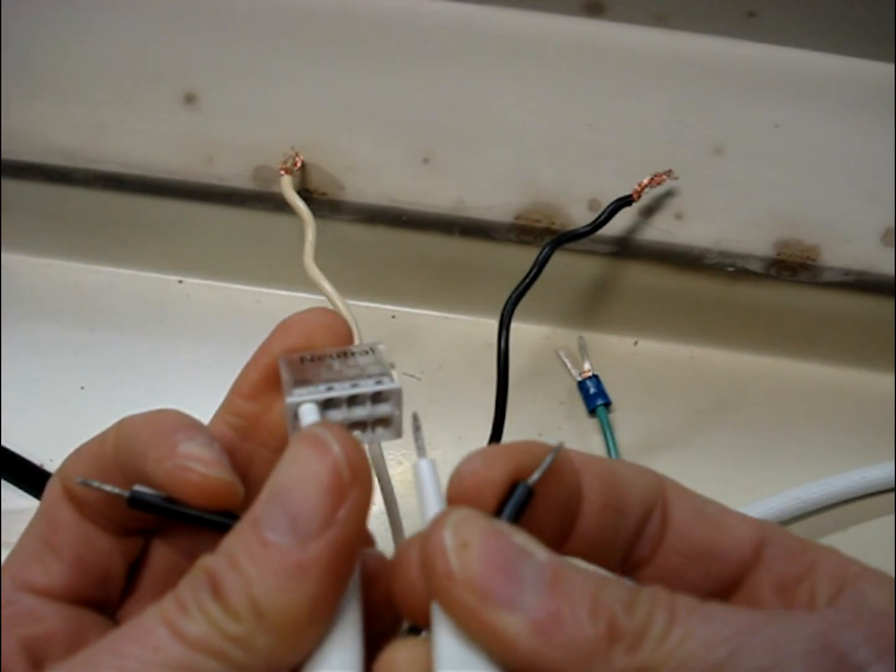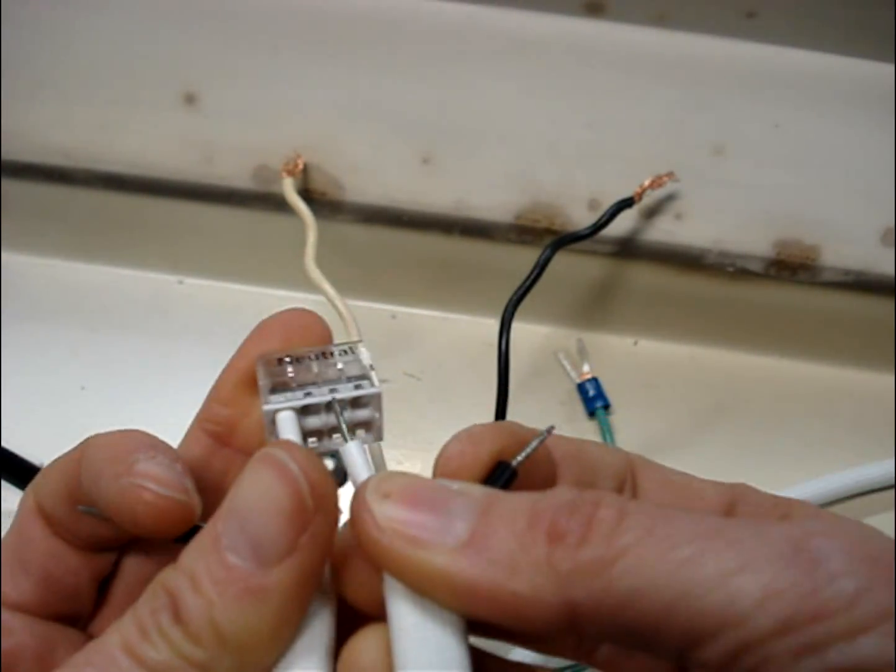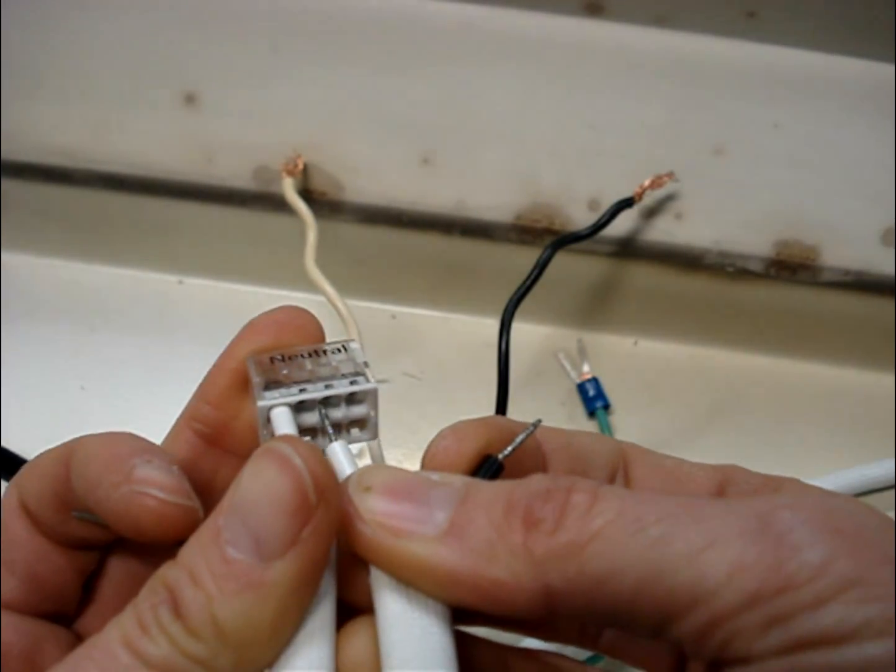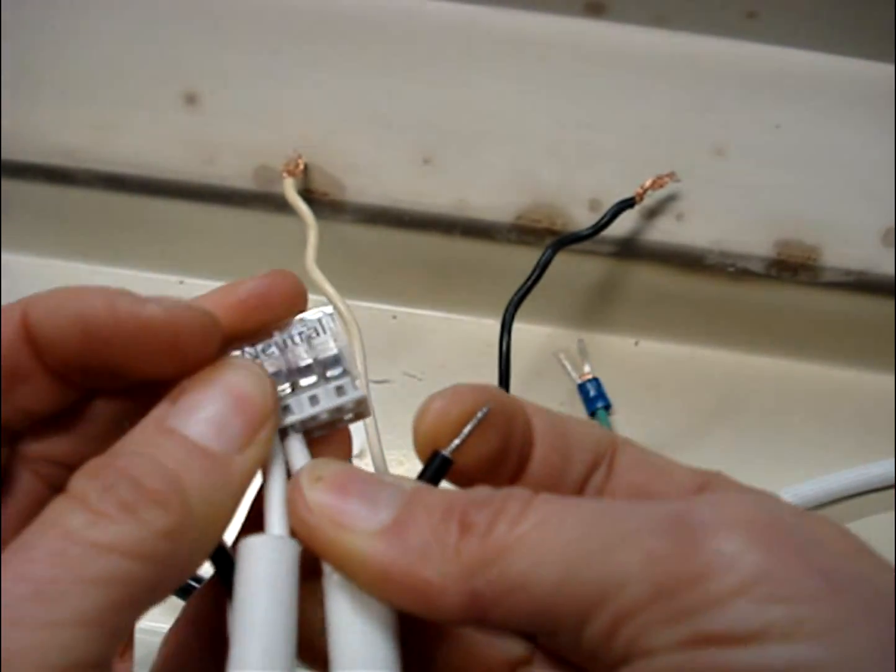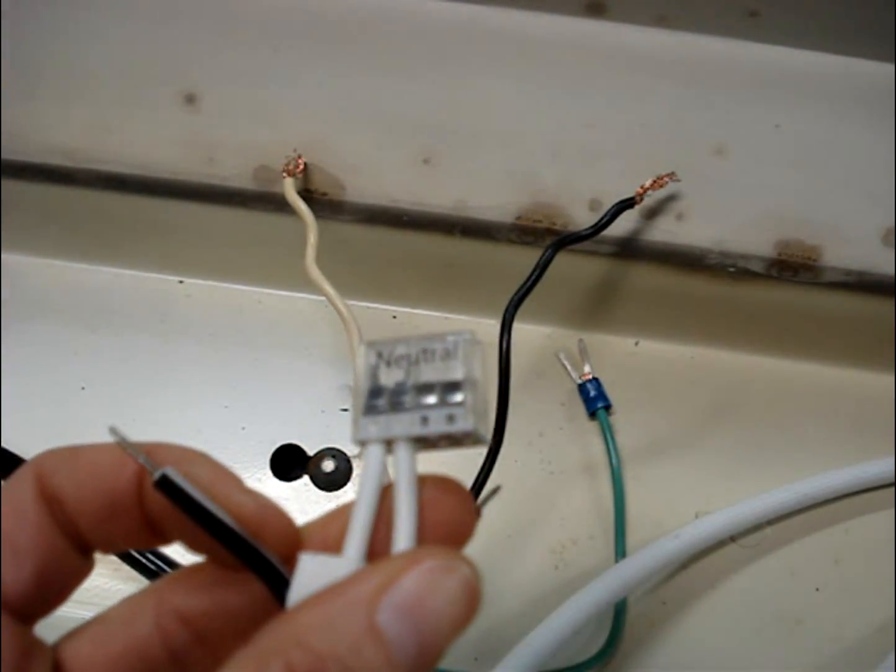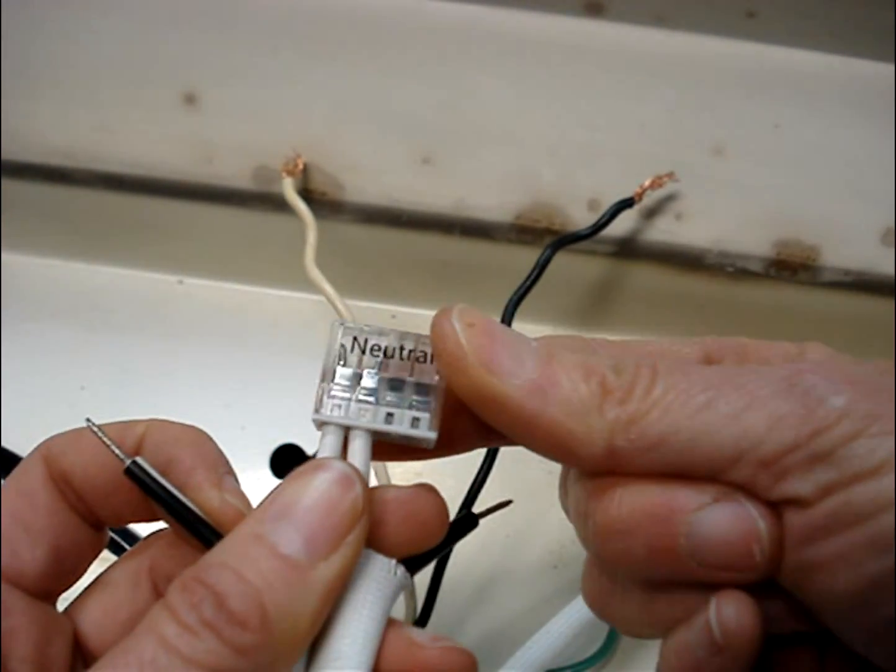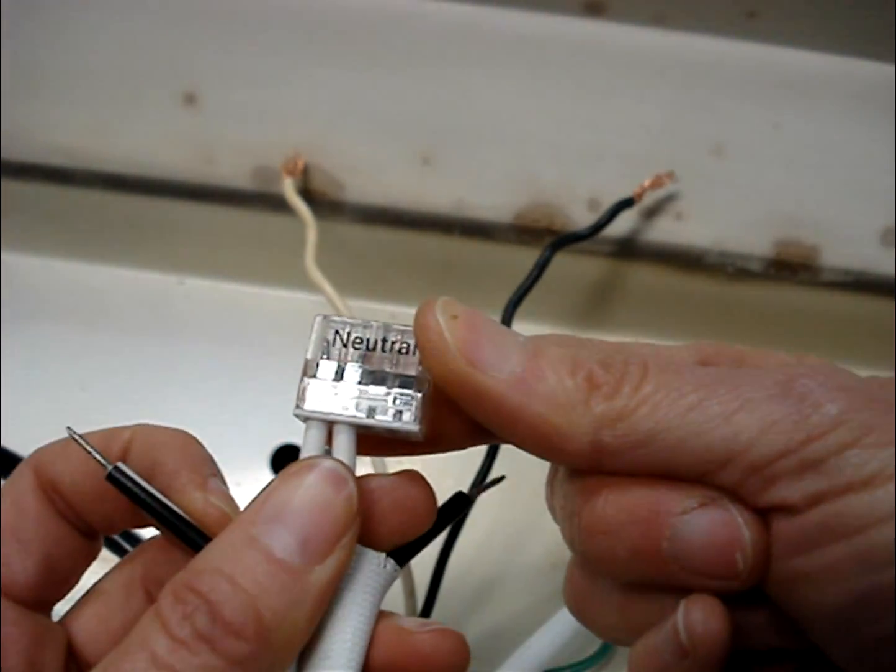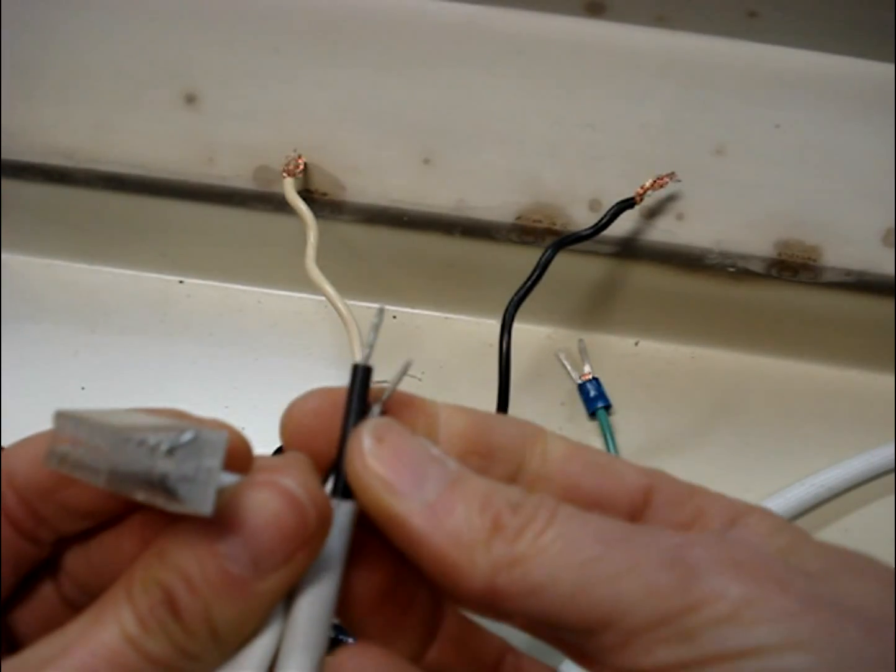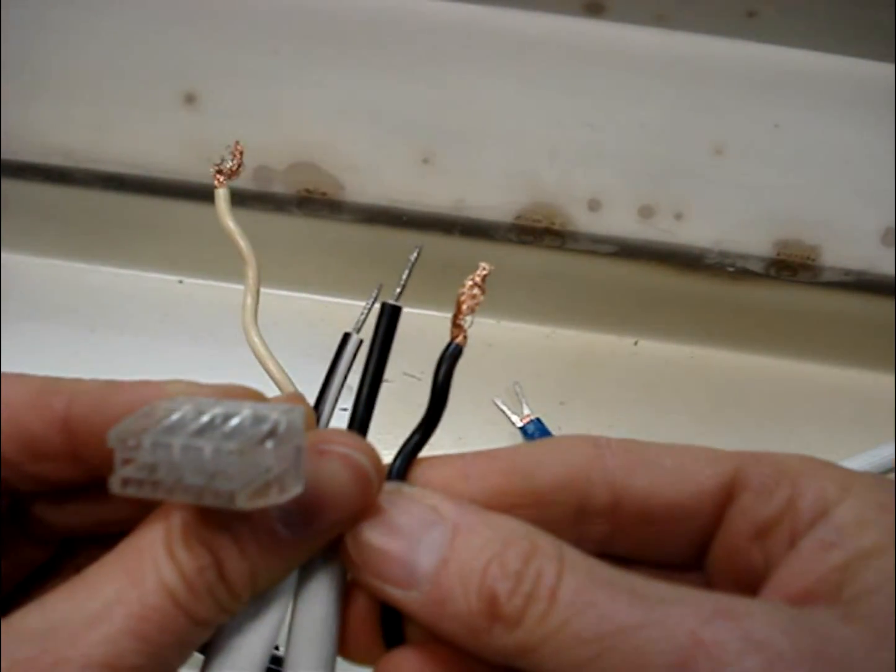And so you would put all the white wires into the connector that says neutral. I can only put two of mine in, but if you had a third solid white wire, you would put that into the quick connector. And then you do the same with all three black wires in the other connector.